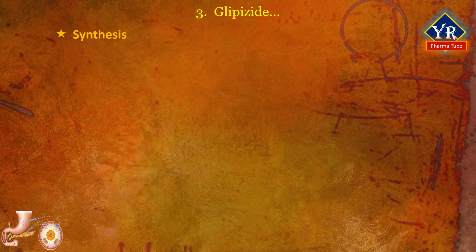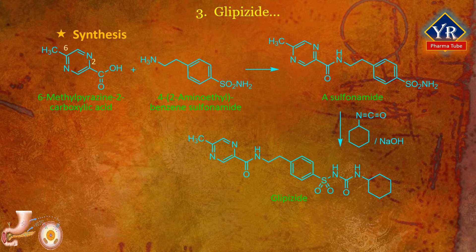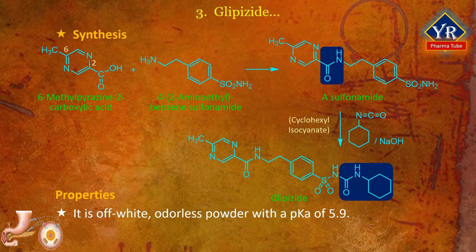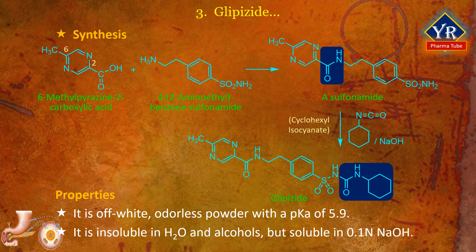Synthesis of glipizide. 6-methylpyrazine-2-carboxylic acid initially reacts with thionyl chloride resulting in the corresponding acid chloride, which undergoes further reaction with 4-(2-aminoethyl)benzene sulfonamide forming the corresponding amide. The resulting sulfonamide reacts with cyclohexyl isocyanate in basic conditions to form the desired glipizide. Glipizide is an off-white odorless powder with a pKa of 5.9. It is insoluble in water and alcohols but soluble in 0.1 normal sodium hydroxide solution.